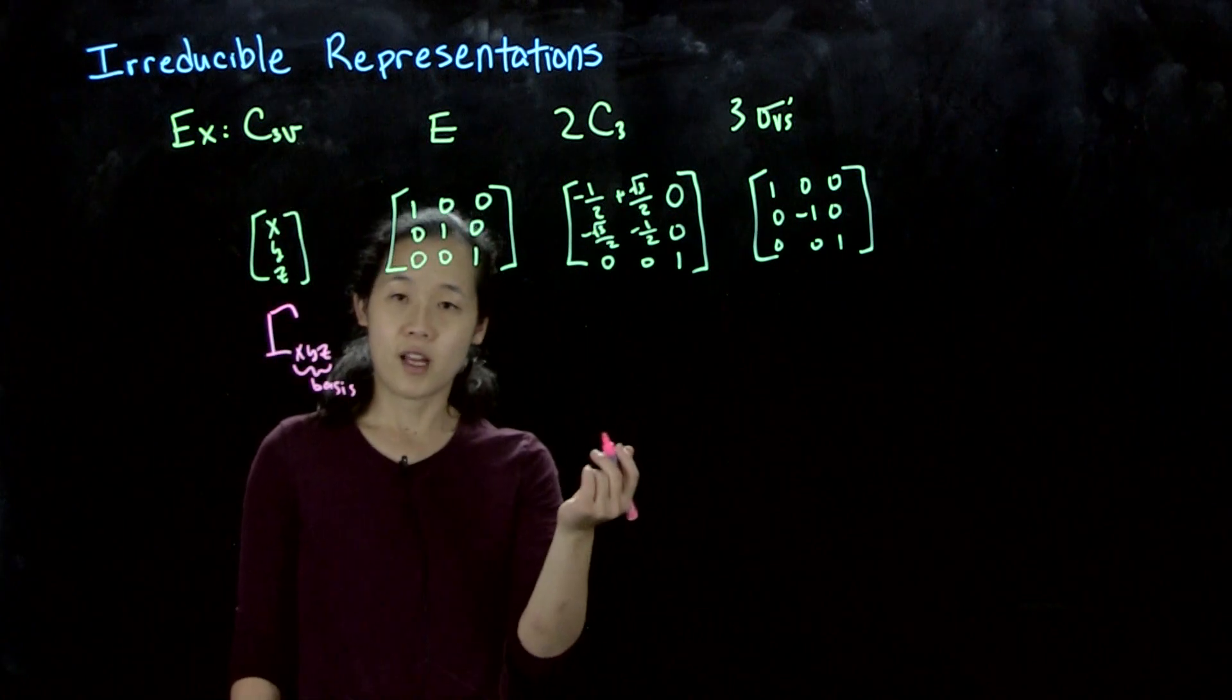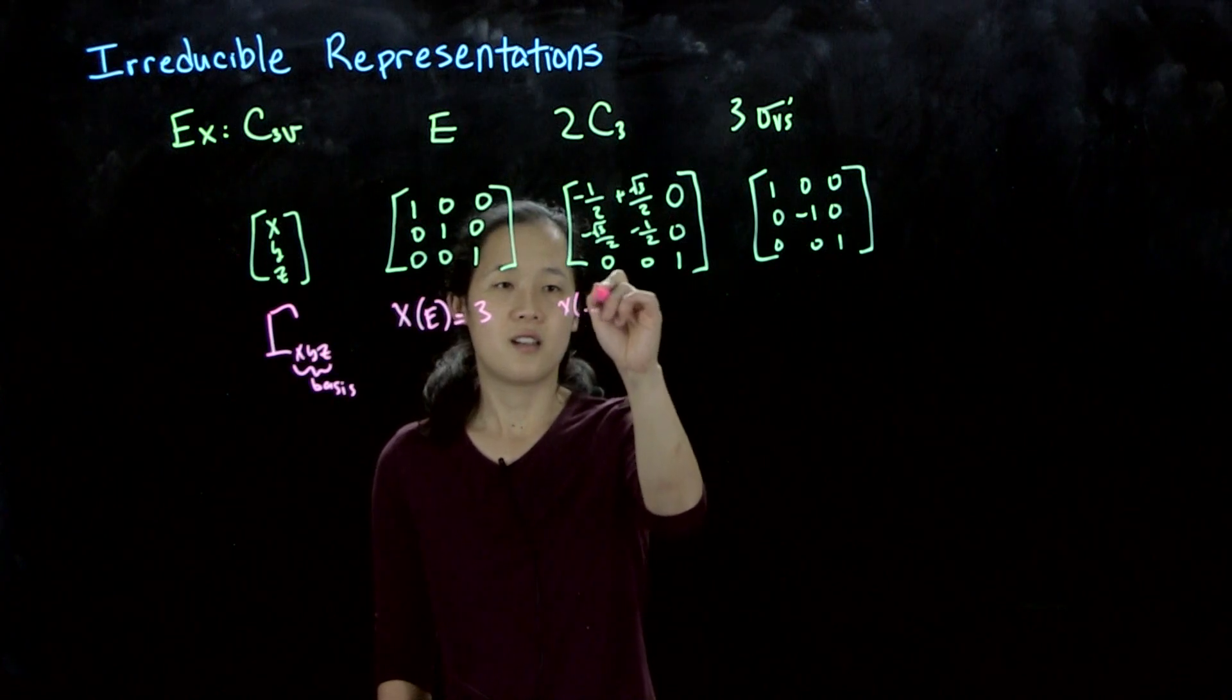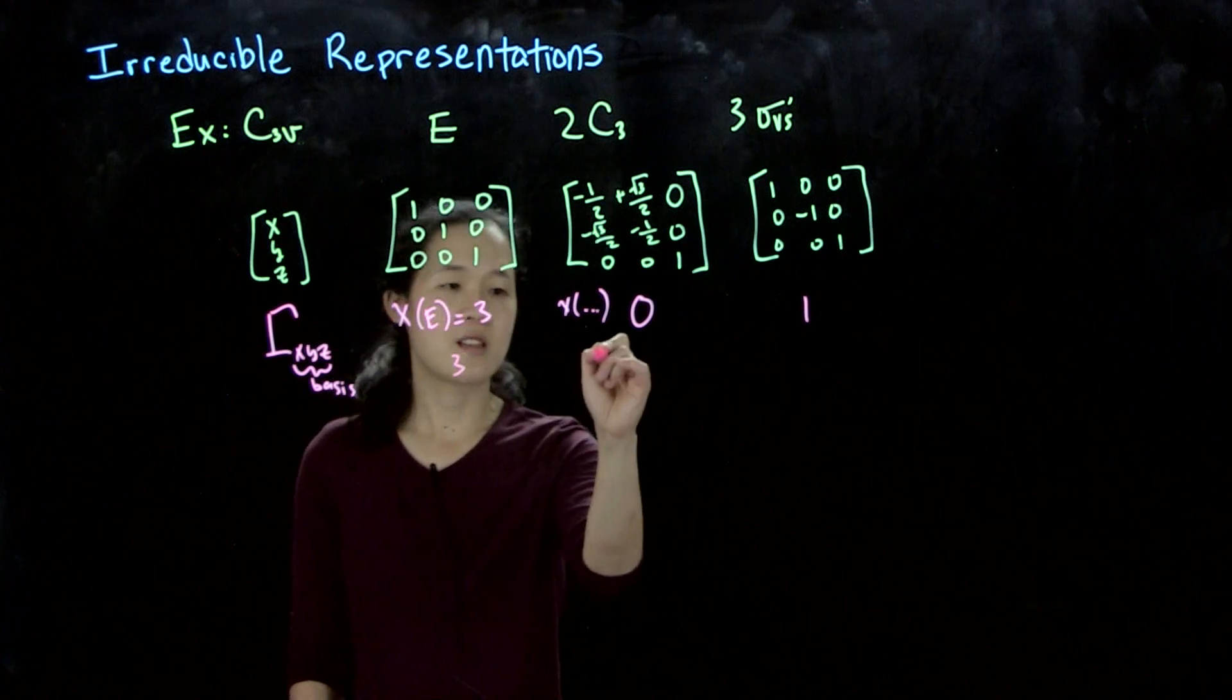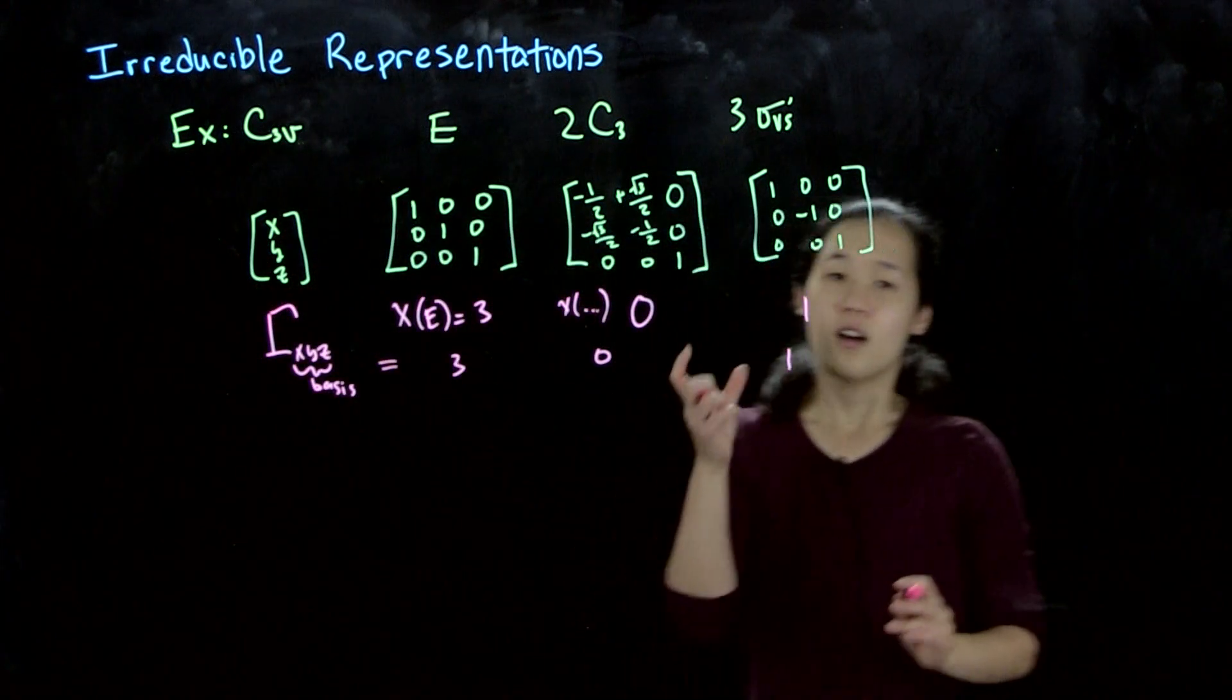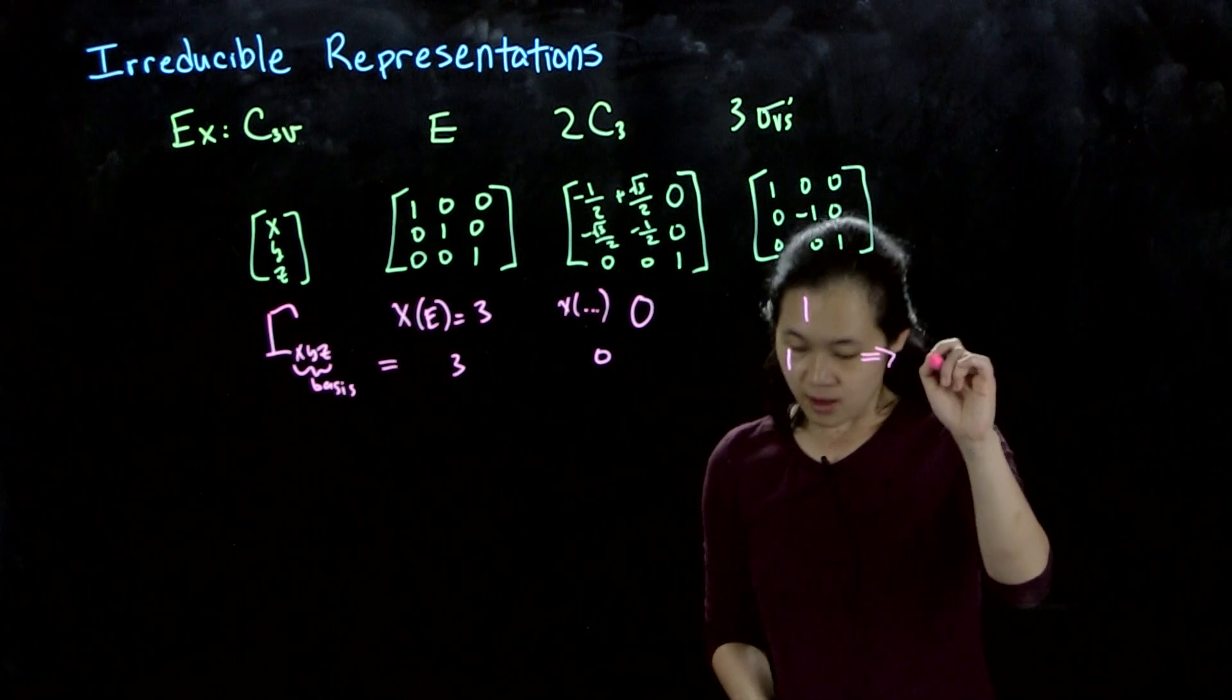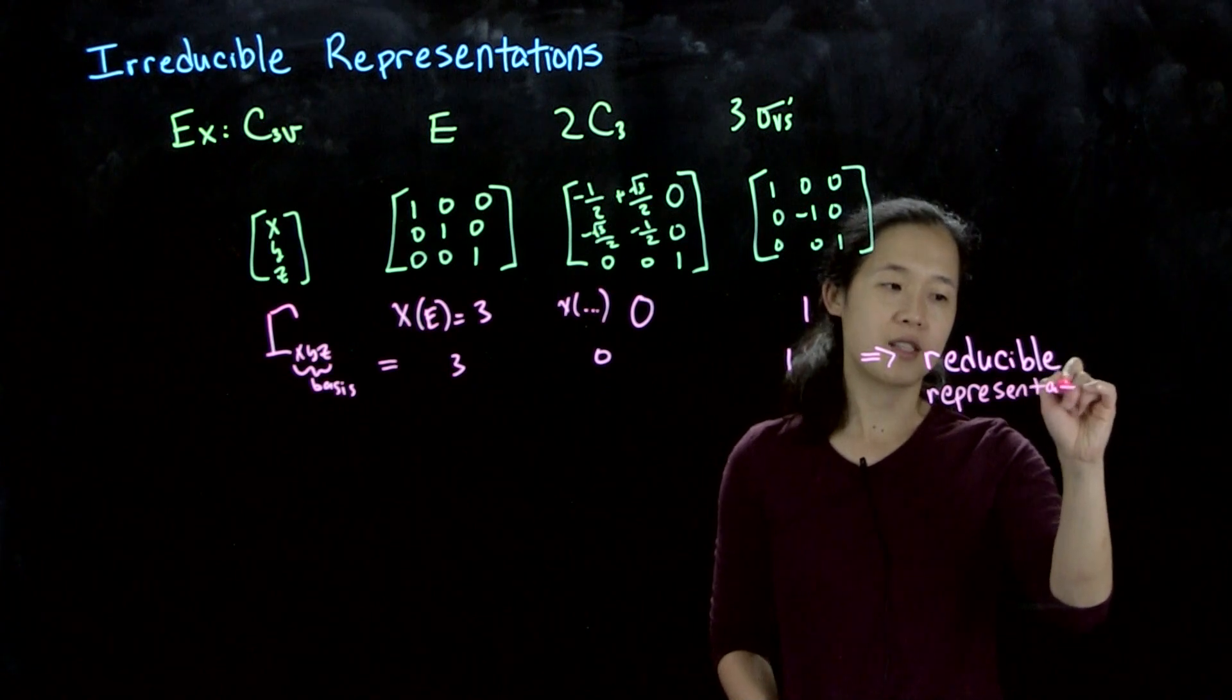So we can write the trace. Chi of E equals 3, and then chi of C3—this is going to be negative 1 half plus negative 1 half plus 1 is 0—and then this trace is 1. So 3, 0, 1. This is what's called the reducible representation.